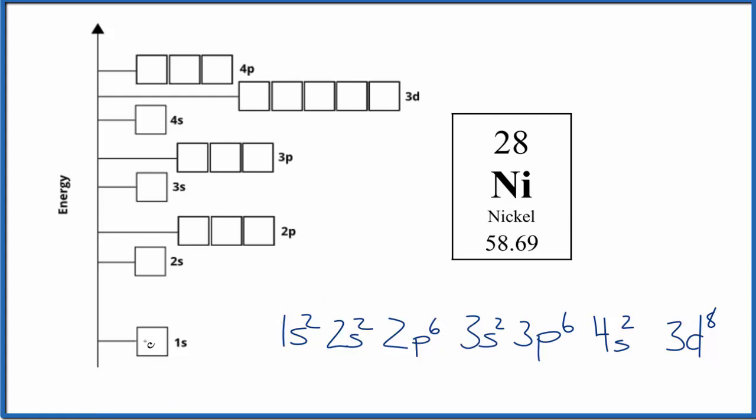So we have 1s2. We put our 2 there in opposite directions, 2s2. For the 2p, for p orbitals, we spread them out first and then we pair them up. We have 3s2, 3p6. We have 4s2. And then finally, we have our 3d8. We spread those out.